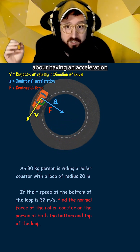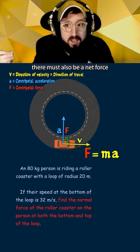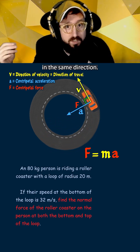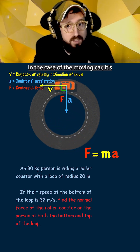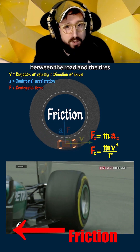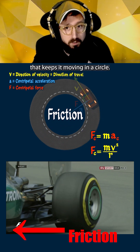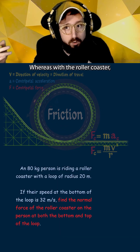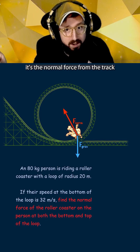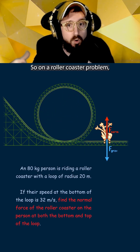Another important thing about having an acceleration is that from F equals MA, there must also be a net force in the same direction. In the case of the moving car, it's the force of friction between the road and the tires that keeps it moving in a circle. Whereas with the roller coaster, it's the normal force from the track that pushes on the person, and this is how heavy they feel.